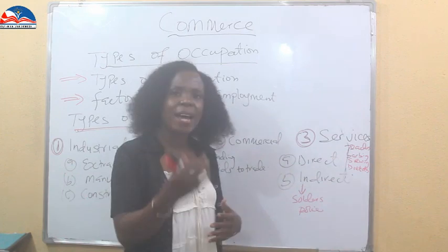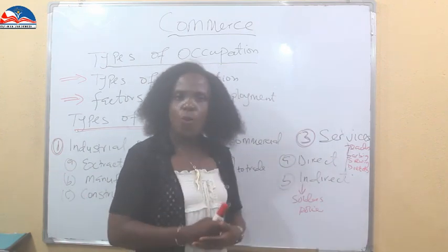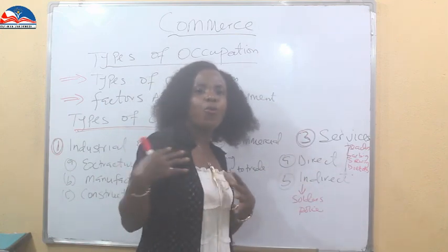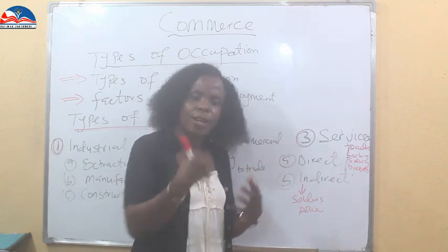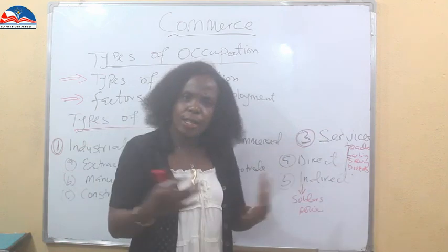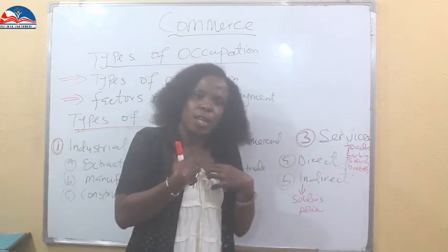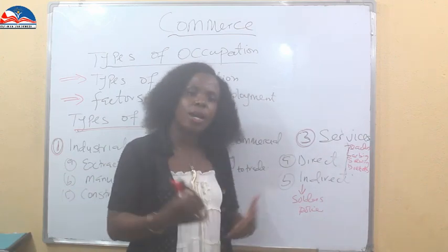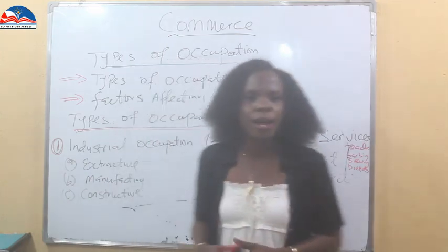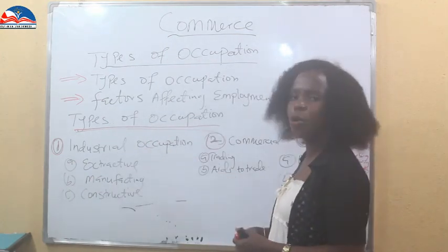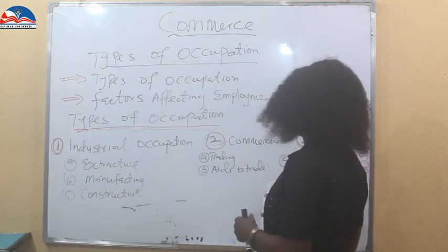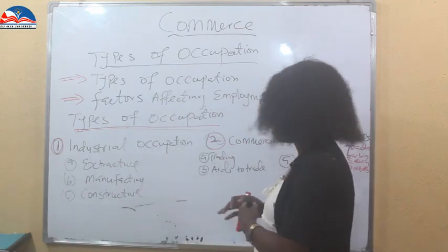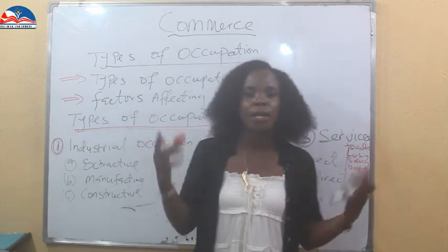Then we have those in indirect service — our soldiers and our police. They are indirectly protecting us, and so we feel their services even if we are not gaining it directly from them. We equally feel the impact of their services and enjoy from it. So we have seen the three areas of occupation: industrial occupation, commercial occupation, and service occupation. Extractive, manufacturing, and constructive come under industrial. Commercial has trade and aids to trade. And service has direct and indirect services.